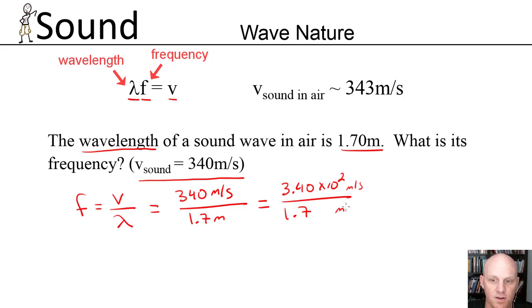Notice the meters per second and the meters cancel and end up with 1 over seconds, which is the same thing as hertz. In this case, 3.4 over 1.7 is 2, and 2 times 10 to the 2 is 200. So there's your frequency, 200 hertz.